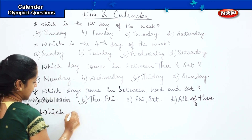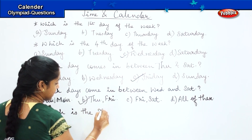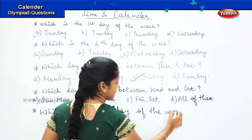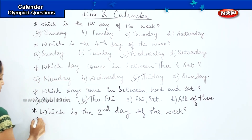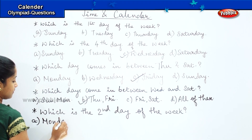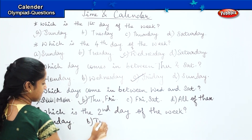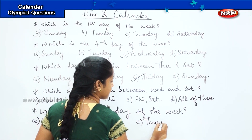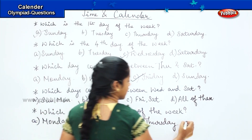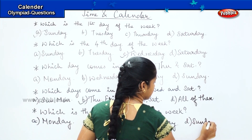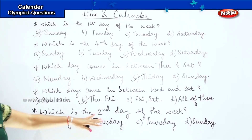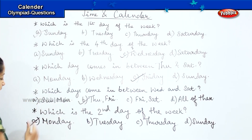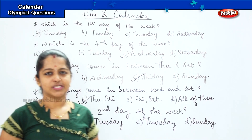Here is the next question: which is the second day of the week? The options are Monday, Tuesday, Thursday, and Sunday. Starting from Sunday, the second day of the week is Monday. Option A is the right answer. It's quite easy, right?